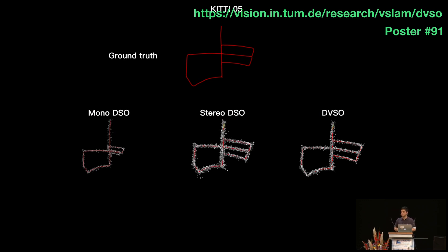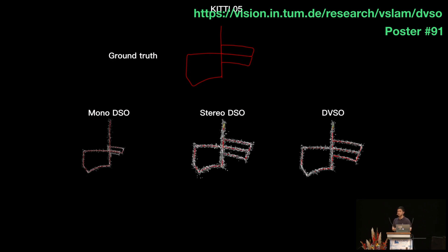A second question: why not use motion parallax from successive frames to improve the depth maps during test time? The speaker agrees it is a good question and notes this could be extended work. The method could also be extended to an online training scheme, since DVSO already estimates poses during runtime, which could in turn be used to refine the StackNet deep neural network iteratively.